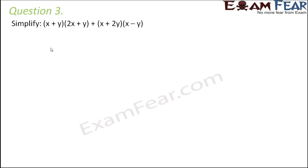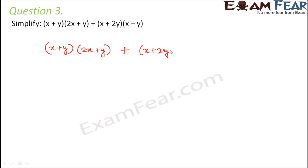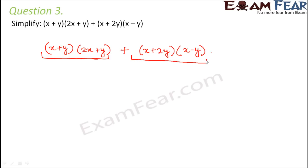So first we need to multiply and simplify. You have a binomial x plus y multiplied by another binomial 2x plus y, and then this needs to be added to another product of two binomials. So this portion is the product of two binomials, and similarly this next portion is also the product of two binomials. So first let us find out these two products and then we can add the two.